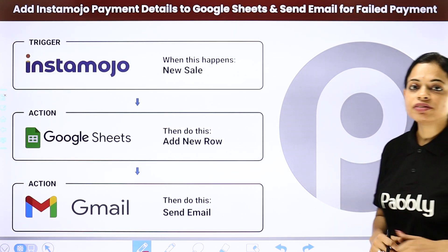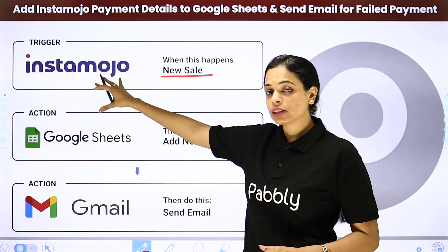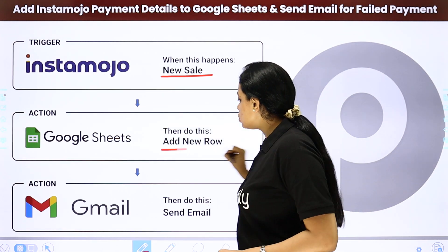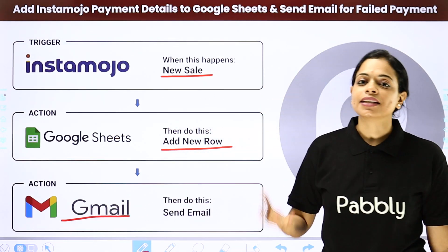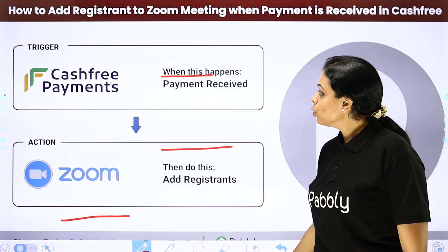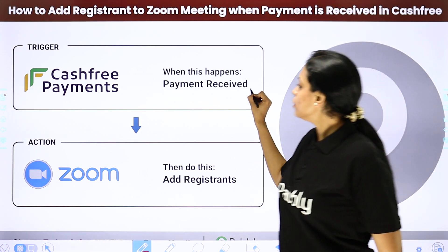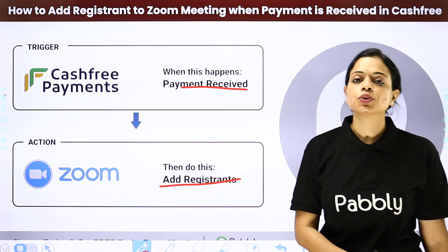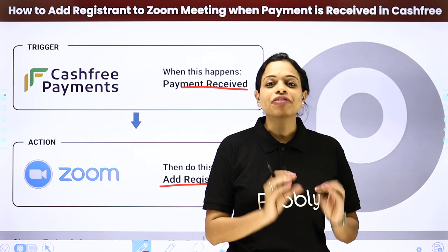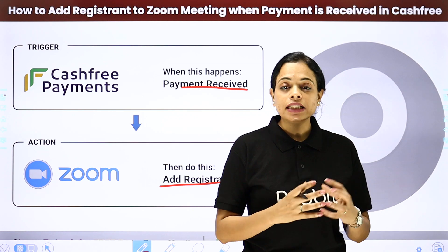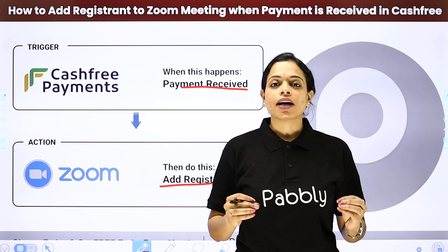Another example: adding Instamojo payment details to Google Sheets and sending an email for failed payments. The moment there is a new sale on Instamojo, the details are added to Google Sheets and an email is sent to the user via Gmail. The last example is Cashfree payments — the moment a payment is received, a registrant is automatically added to Zoom.